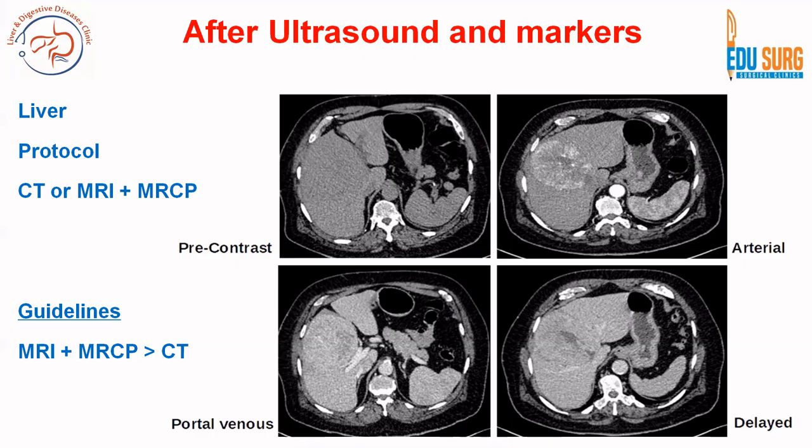We have separate videos on liver protocol CT and MRI, as well as pancreas protocol in the radiology playlist. In a liver protocol — CT or MRI — you will have pre-contrast images, arterial images, portal venous, and delayed images. Note that the images currently shown are diagnostic of HCC, not intrahepatic cholangiocarcinoma — they are included as a reference to the liver protocol video.